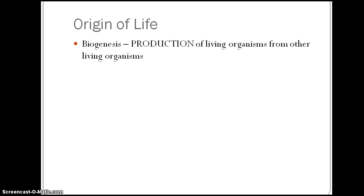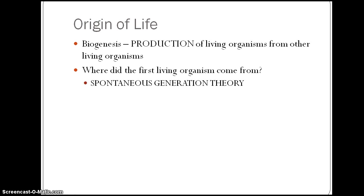During Darwin's time and even before, people wondered about the origin of life. A word for that is biogenesis — the production of living organisms from other living organisms. There are three theories to discuss: the first is the theory of spontaneous generation, the second is the protocell theory in which cell-like organisms came together to become cells, and the third is the Big Bang Theory.